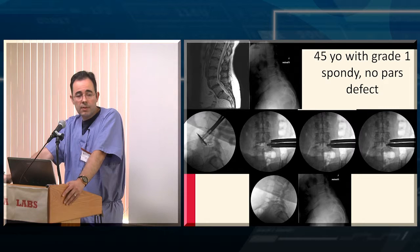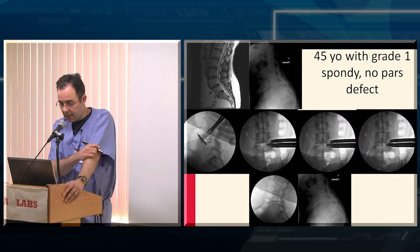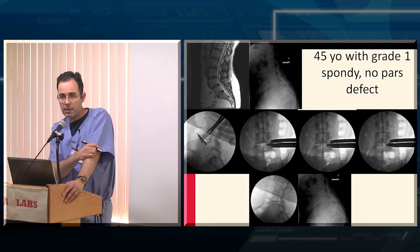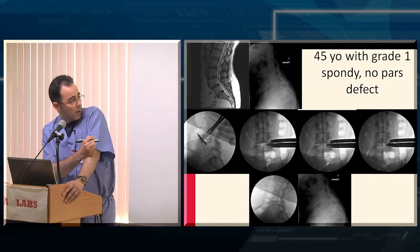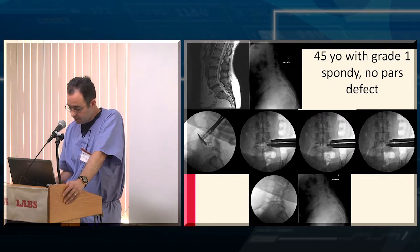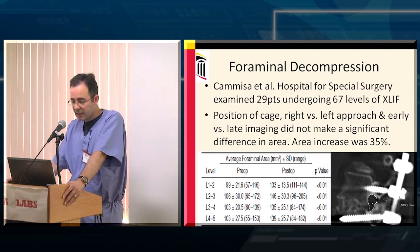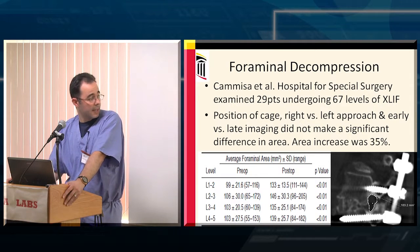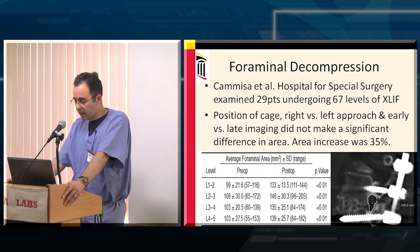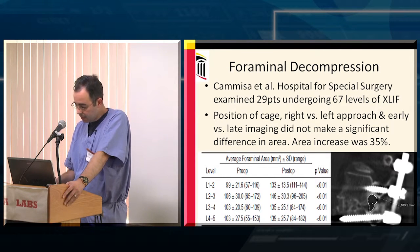As far as other deformities: grade 1 and grade 2 spondylolisthesis are a perfect application for this technique, especially with a patient who has a fairly decent-sized disc base and mild to moderate neural foraminal stenosis. You can get a very nice interbody graft into this disc base and achieve resolution of pain and pathology. How much foraminal decompression can you actually get from this indirect decompression? The answer is about a 35% foraminal area increase — significant, because it provides meaningful relief of symptoms, and this was correlated with improvement in patient pain scores.